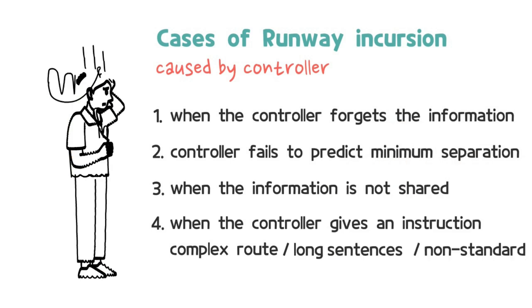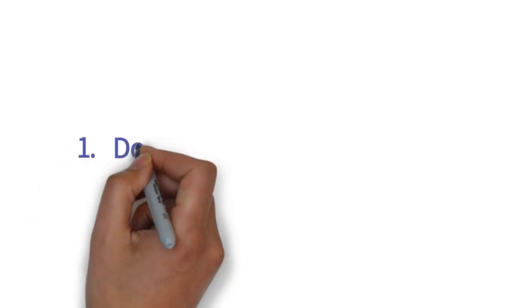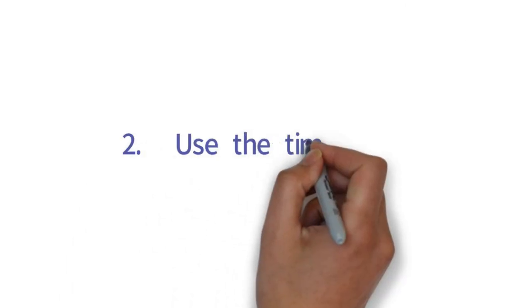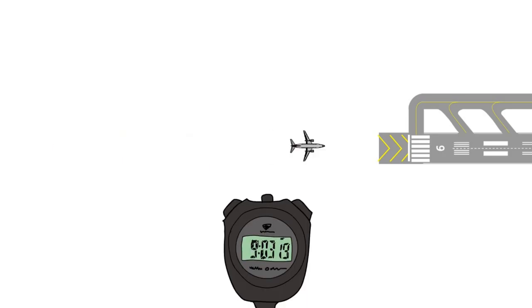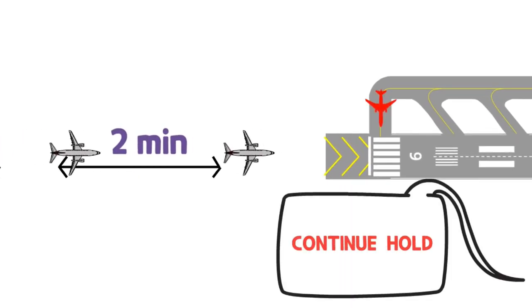Then, let's do the opposite of previous cases to prevent the situation. 1. Don't forget the information. Prepare assist devices such as an alarm or safety measures on every control unit. 2. Use the time data. Gather the data of time taken for each aircraft's route and use it in separation. If you expect the separation will be tight, choose a delay option.